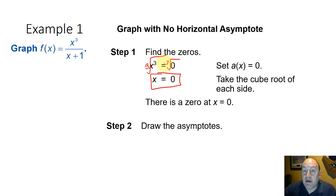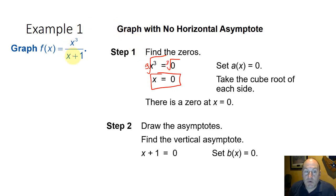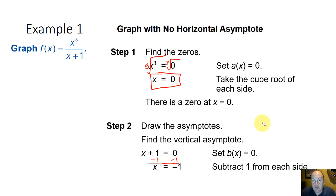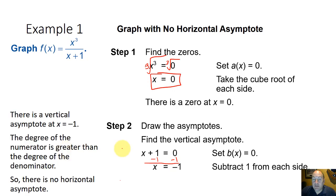Now let's draw the asymptotes. We know there's a vertical asymptote where the function is undefined — where the denominator equals zero. We set x plus 1 equal to zero, subtract 1 from both sides, and x equals negative 1. So we have a vertical asymptote at x equals negative 1. Since the degree of the numerator (3) is greater than the degree of the denominator (1), this function is going to go off towards positive or negative infinity, so it has no horizontal asymptote.